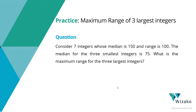This is a GRE quant practice question — a tough one from the topic of statistics and averages. It focuses on two concepts: median and range. Consider seven integers whose median is 150 and range is 100. The median for the three smallest integers is 75. We need to compute the maximum range for the three largest integers.